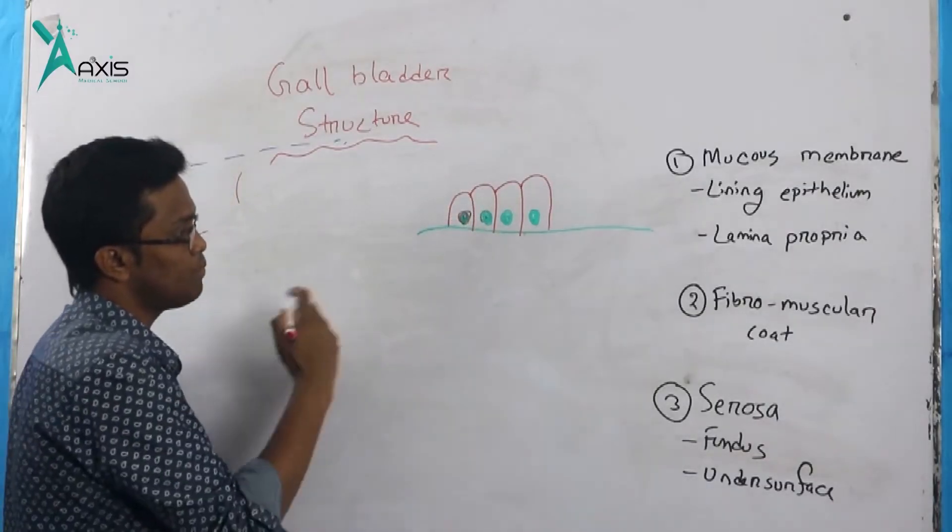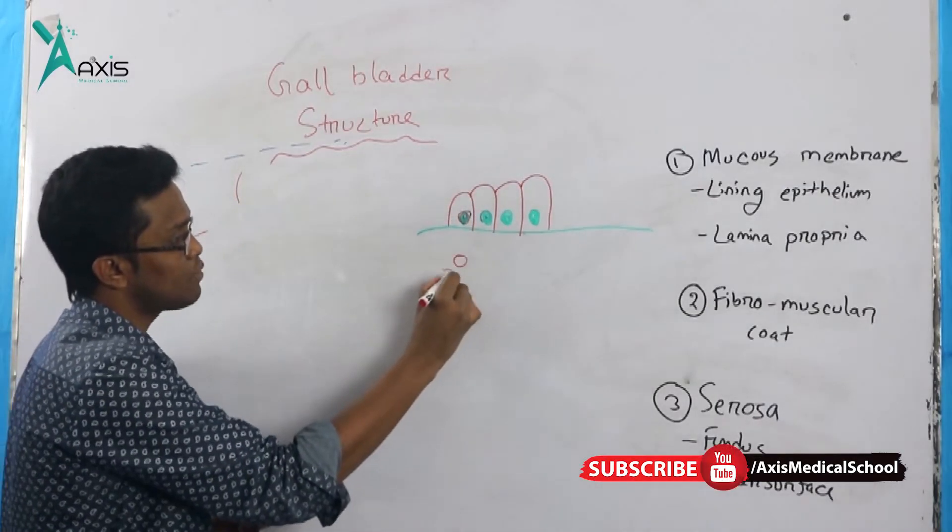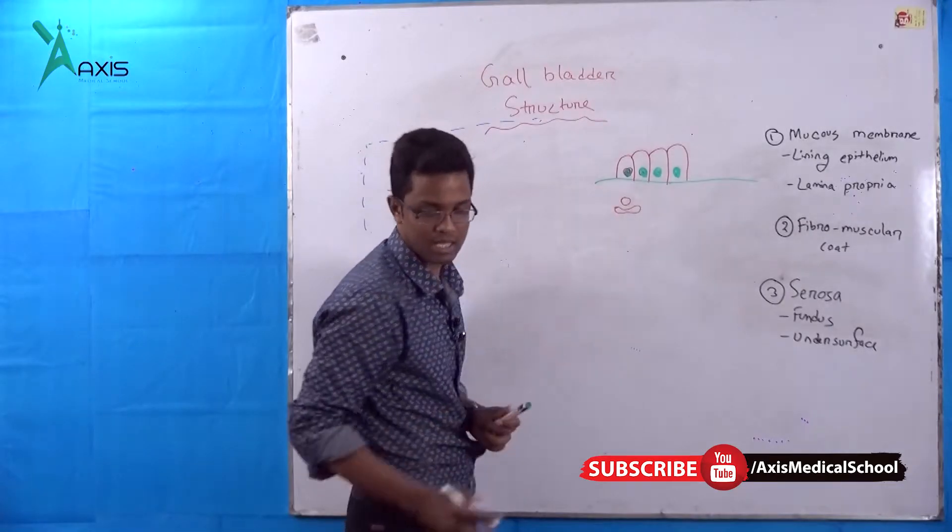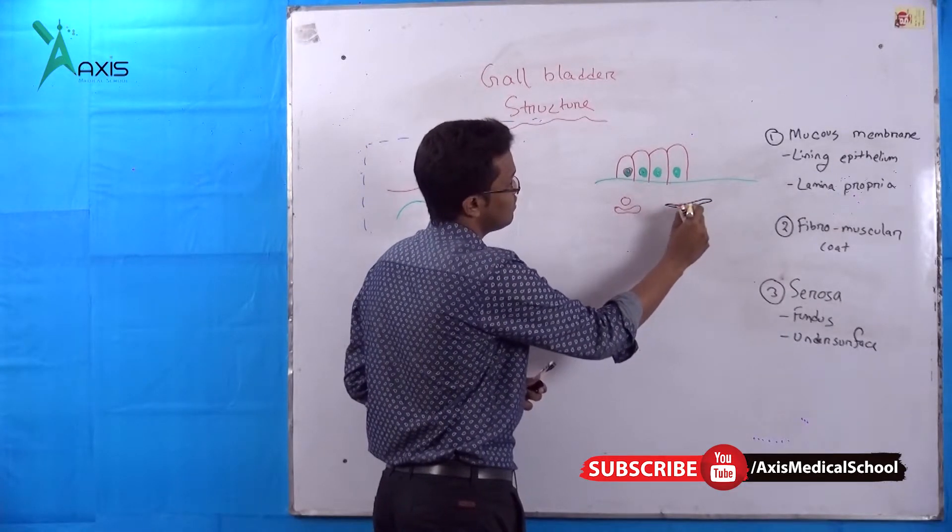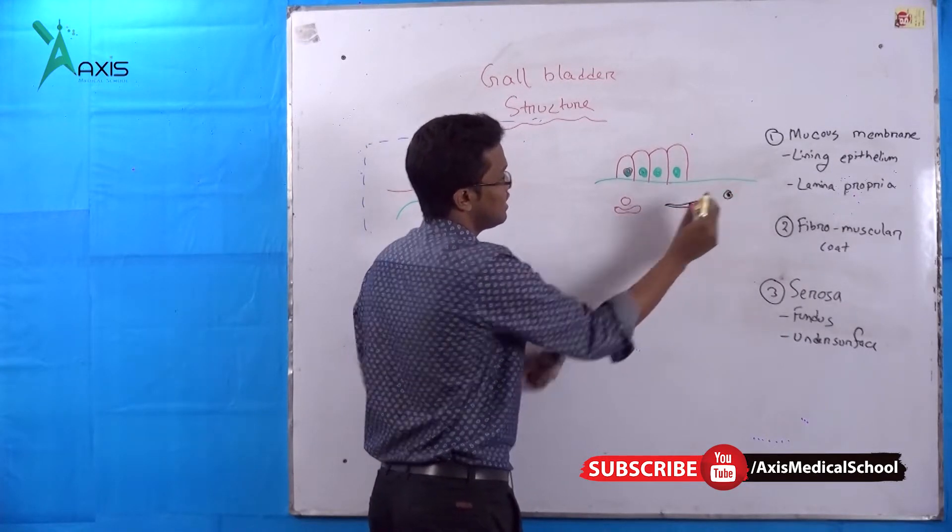Below that is the lamina propria. In the lamina propria there are blood vessels, and you can see some fibroblasts in between. These fibroblasts, some lymphocytes, and blood vessels.